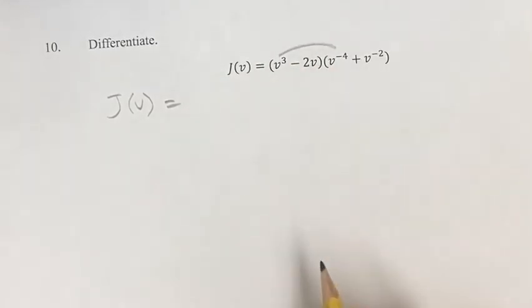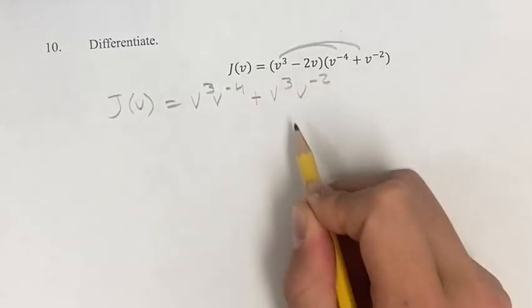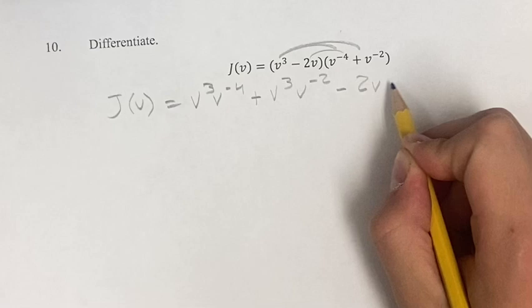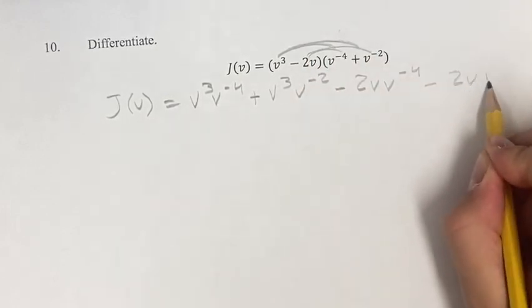We have v cubed times v to the negative 4th. So, just distributing out plus v cubed v to the negative 2 minus 2v times v to the negative 4 minus 2v v to the negative 2.